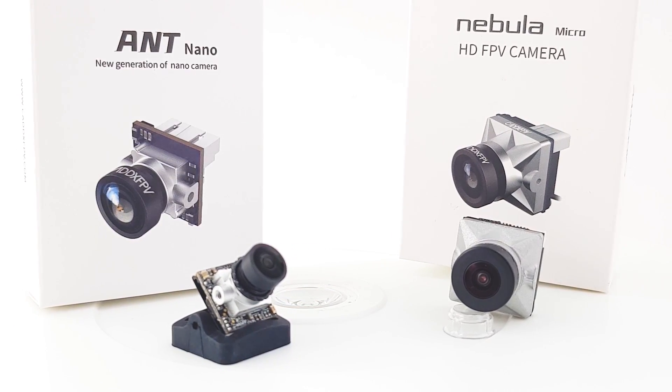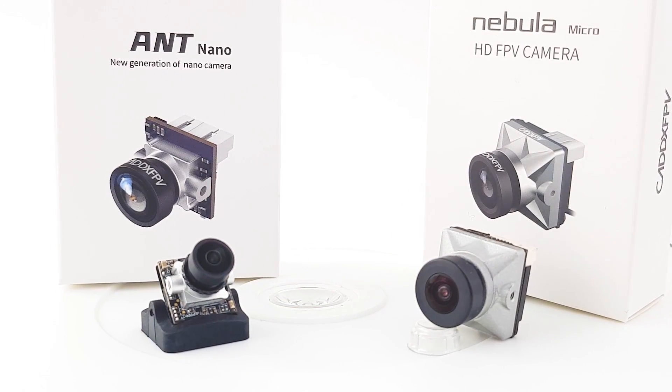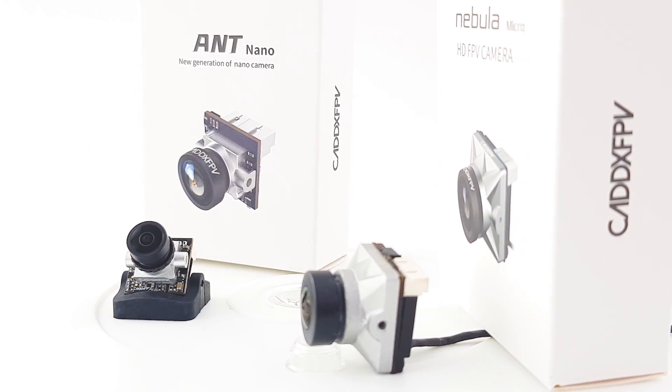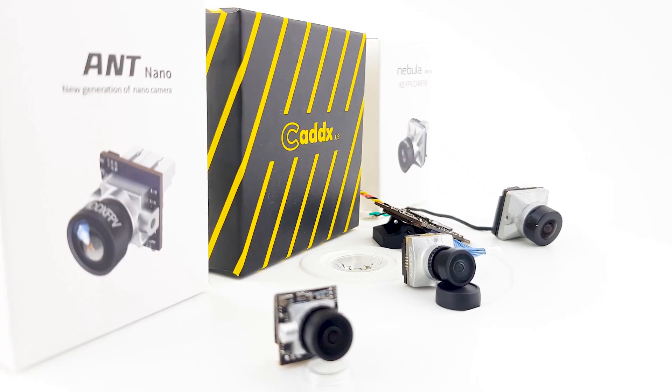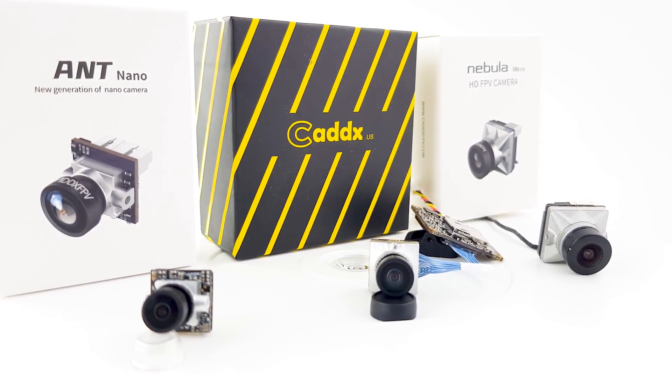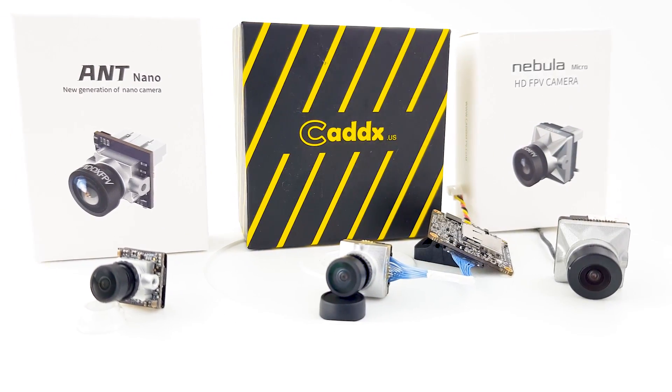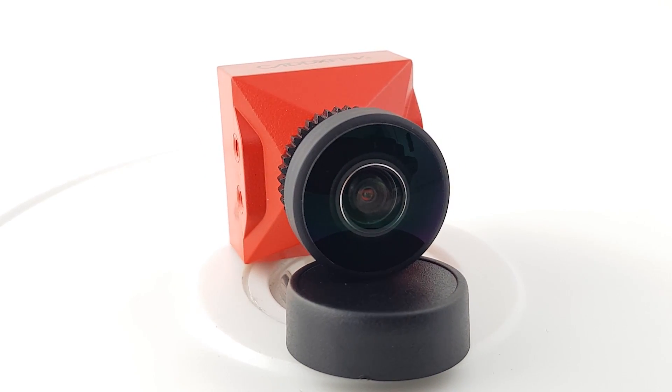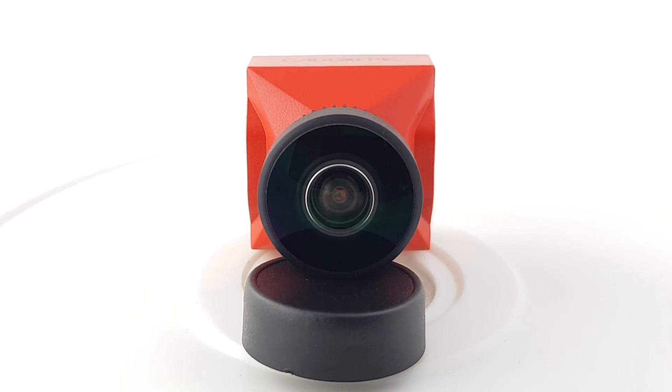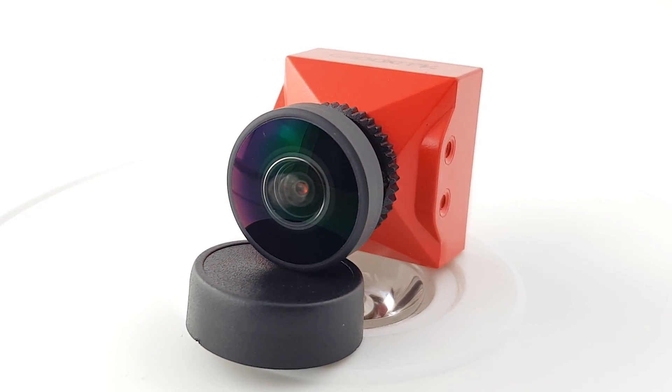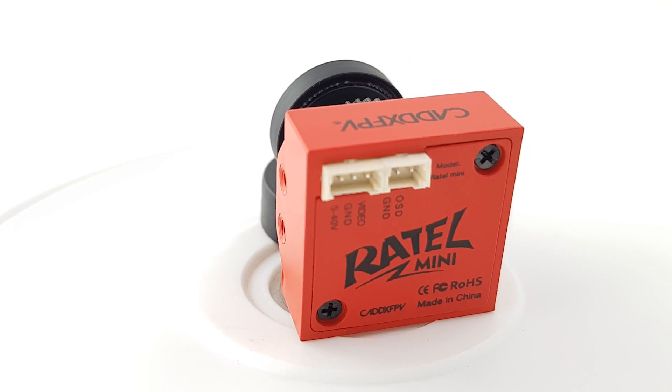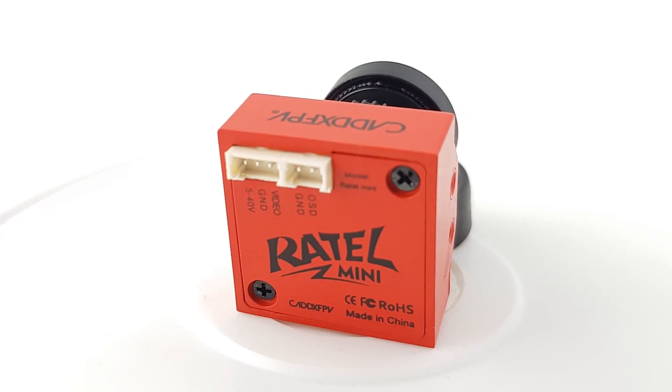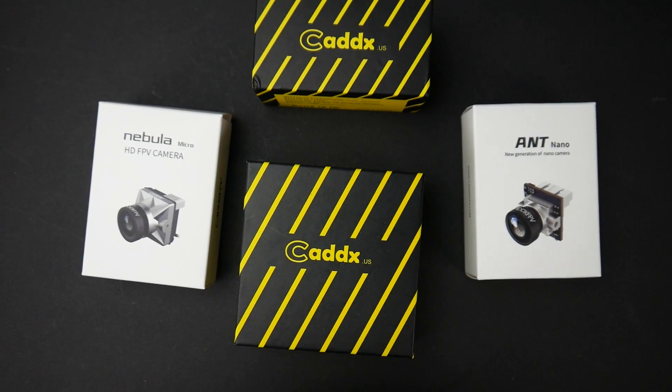In today's video we're going to be testing four new cameras from Caddx. We're going to test the all-new Ant Nano for latency, also their Nebula which is a pretty interesting one with a weird use case, the Loris which is a split type camera that records 4K, and the all-new Ratel Mini. We're not going to be doing any video comparisons because I've gotten way too many cameras. All I'm going to be doing is latency testing and hopefully that helps out. So with that being said, let's get started.